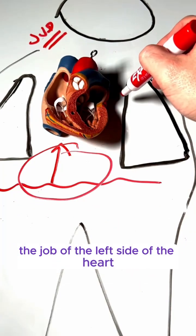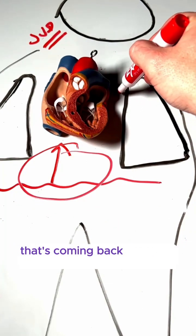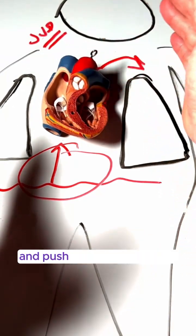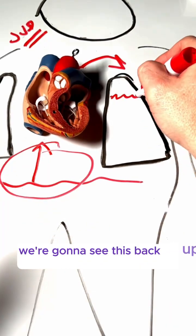Now the job of the left side of the heart is to take that blood that's coming back from the lungs and then push it out into the body. So if it's unable to take that blood from the lungs and push it out into the body, we're going to see this back up into the lungs.